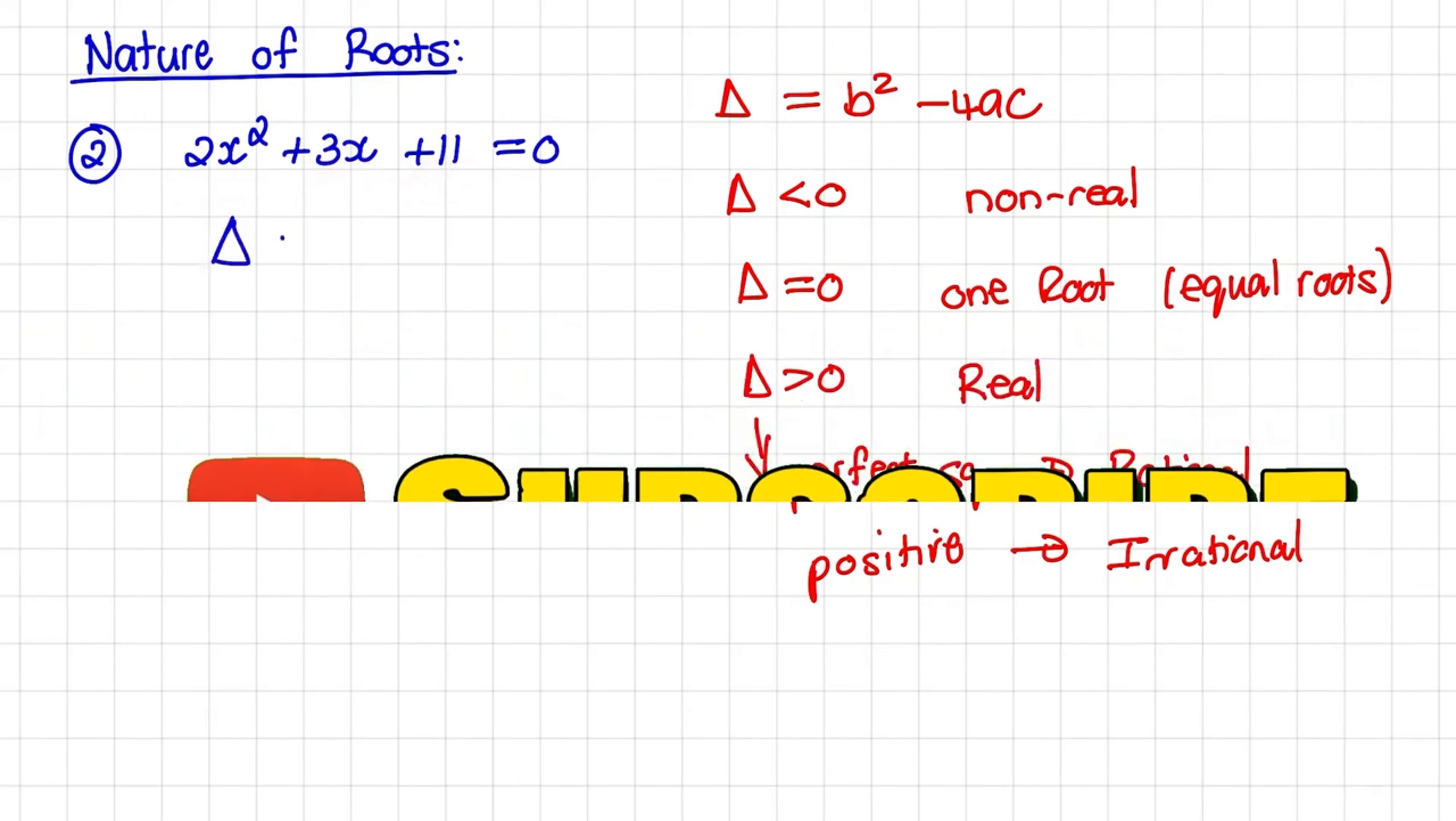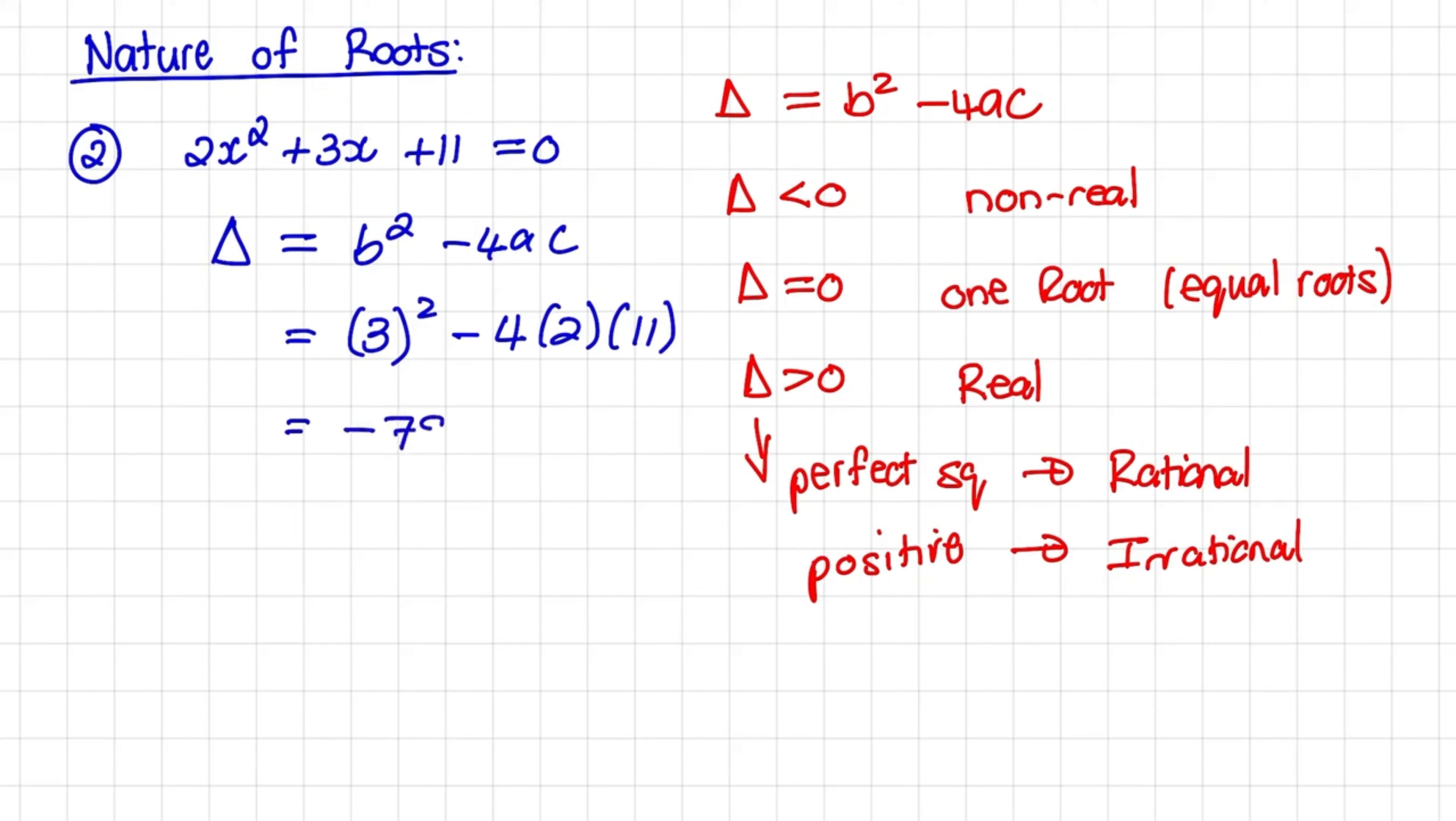So our discriminant is, again, b squared minus 4ac, where b squared is 3 squared minus 4 times 2 times 11. The answer equals negative 79.